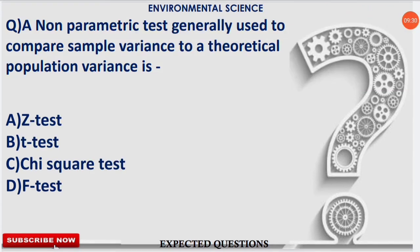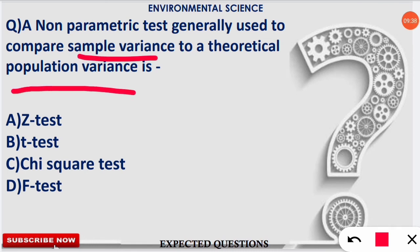The next question: a non-parametric test generally used to compare sample variance to the theoretical population variance is called what? The correct option is option C — chi-square test. The chi-square test is a non-parametric test. Remember: the non-parametric test used to compare sample variance with theoretical population variance is the chi-square test.